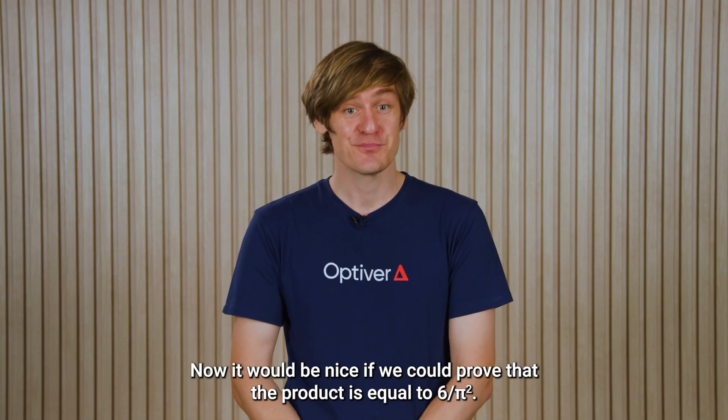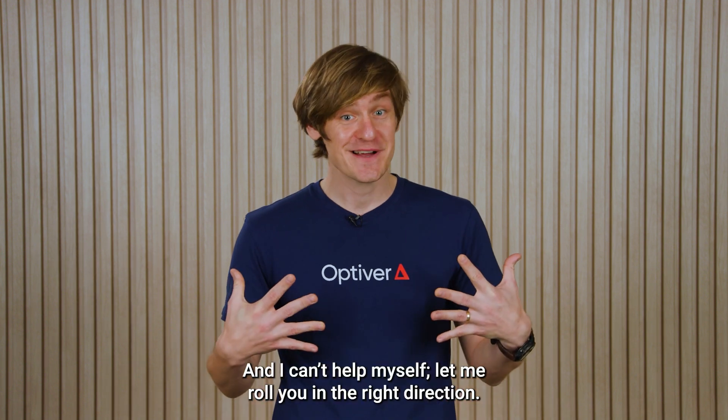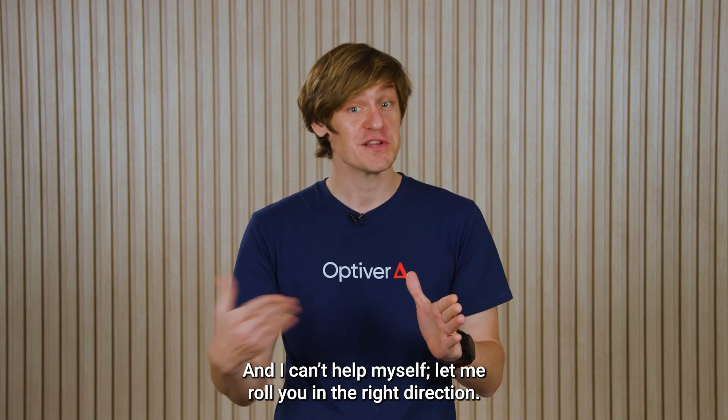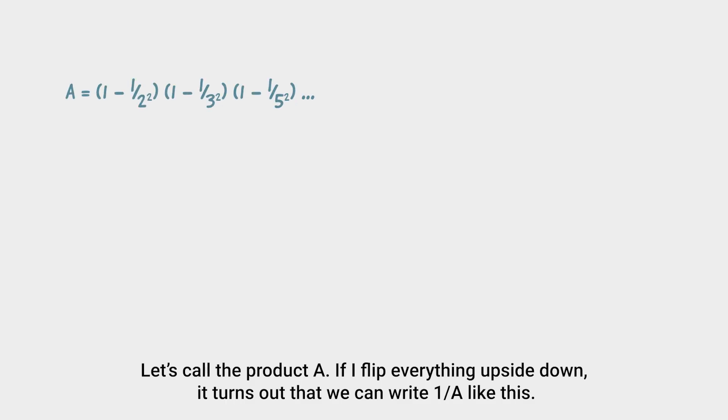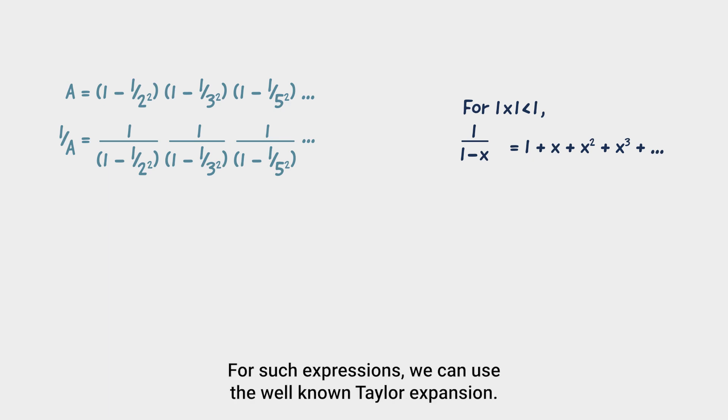Now, it would be nice if we could prove that the product is equal to 6 on pi squared. And I can't help myself, let me roll you in the right direction. Let's call the product A. If I flip everything upside down, it turns out that we can write 1 over A like this. Each of the terms in the product is now of the form 1 over 1 minus x, where x is some number smaller than 1.